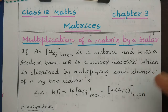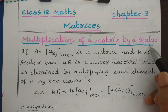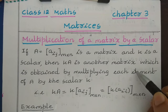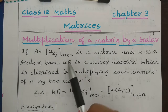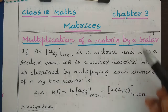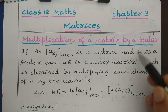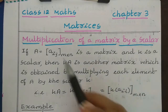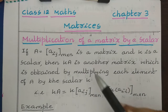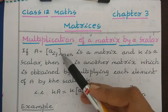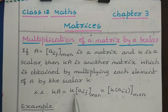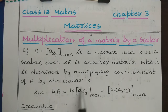First let us understand what is a scalar. A scalar is an element which we can multiply with the matrix. If we have a matrix A with elements Aij of order m cross n, and a scalar K, then multiplying K with the matrix gives KA, which is another matrix obtained by multiplying K with each element of A. So KA equals K into Aij, of order m cross n.